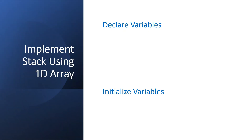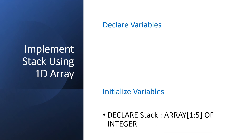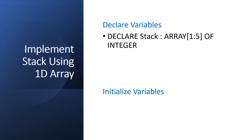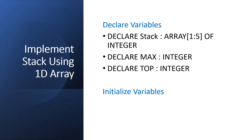Let's see how to implement a stack using an array. We have to declare an array as a stack to store elements. In this example, we are going to store numbers, so the data type is integer. You can mention the data type as per your data, like string, character, or real. Then declare max as an integer variable, which is used to indicate the maximum size of the stack. Also declare the top variable, which stores the index of the last element. Initialize these variables with the value of max, and top is 0, which indicates that the stack is empty.